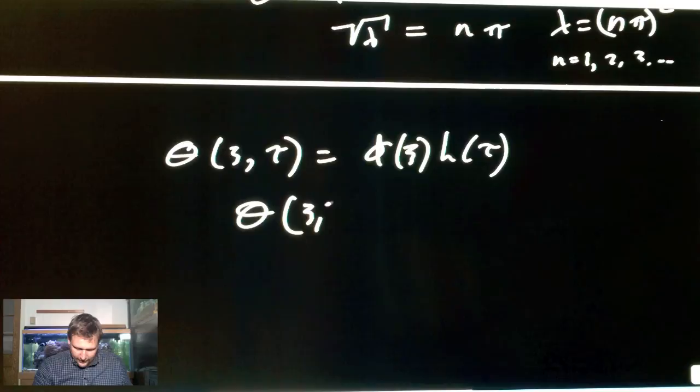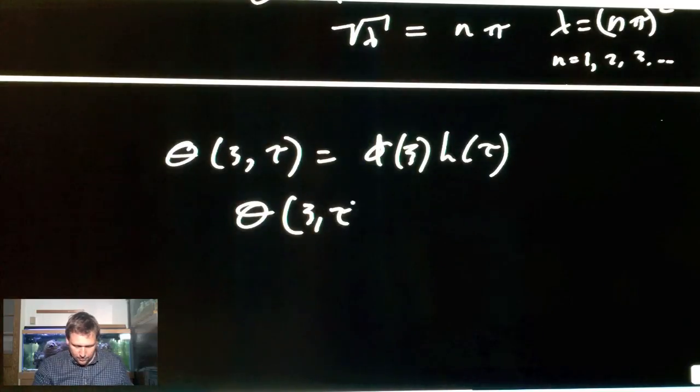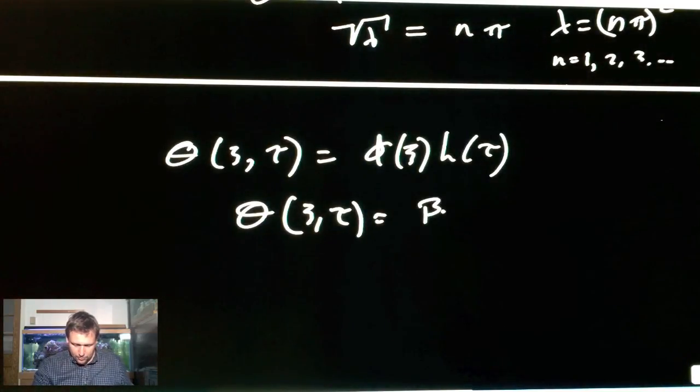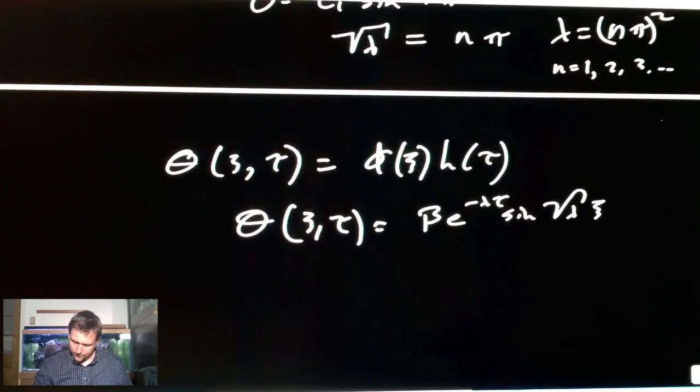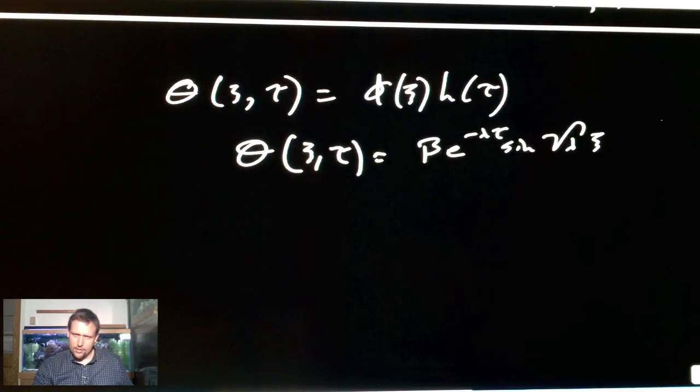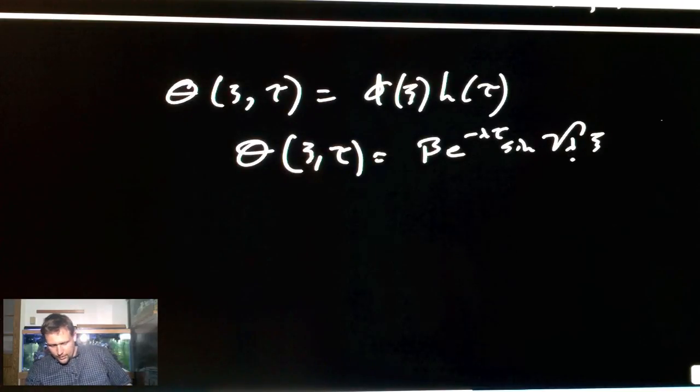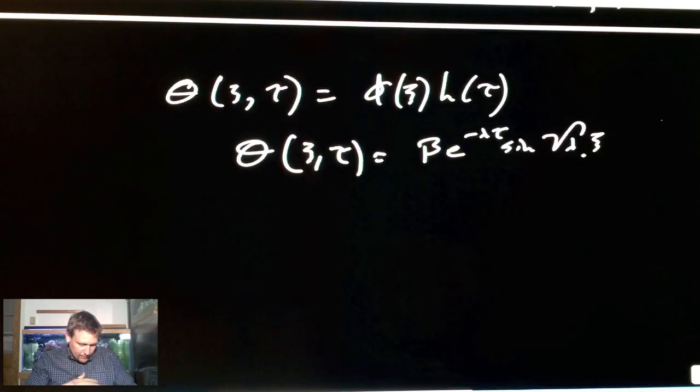So, the solution we started with, when we separated the variables, theta is a function of psi, tau equals phi, which is a function of psi times h, which is a function of tau. The product of those, theta. Now, for one solution for theta, psi, tau equals some new constant B. We're just going to multiply them together into a new constant. It almost looks like a beta. It could be either way. Whatever floats your boat. So, e to the minus lambda tau, sine square root lambda, psi. So, we're getting there. This looks promising.